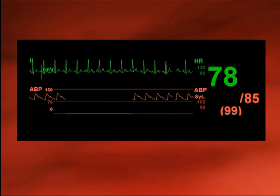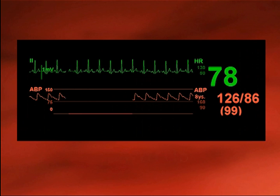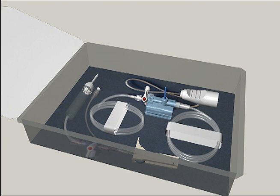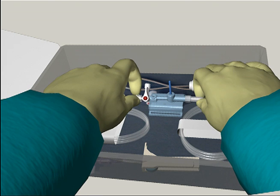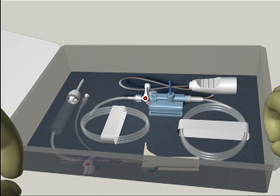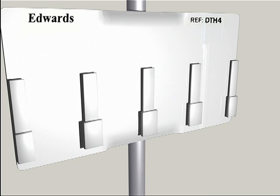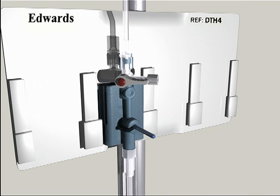Prepare the TrueWave transducer using the following six steps. Step one: Using aseptic technique, remove the transducer kit from the sterile packaging and ensure all connections are secure. Step two: Insert the TrueWave transducer into a mounting backplate that is secured on an IV pole.